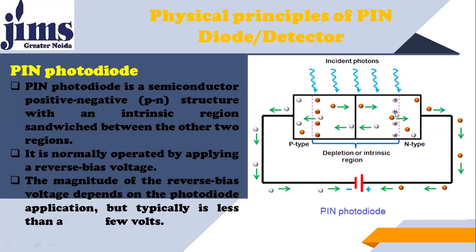It's a very wide region, and that region becomes an active region because all the incident light coming from the optical fiber is incident on that region. Because of this intrinsic region, there are no free charge carriers — no free electrons and holes — so this is a high resistive region. The biasing used in this photodiode is reverse biasing: the negative terminal is connected to P and the positive terminal of the battery is connected to N.